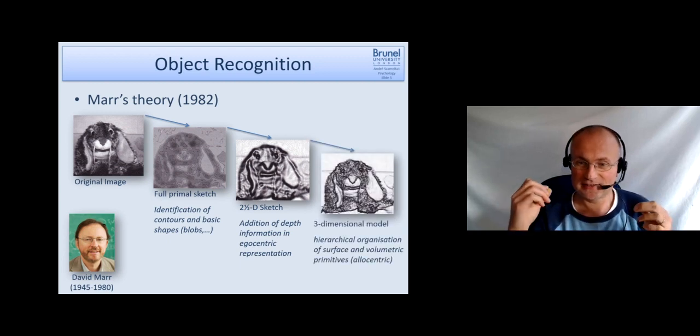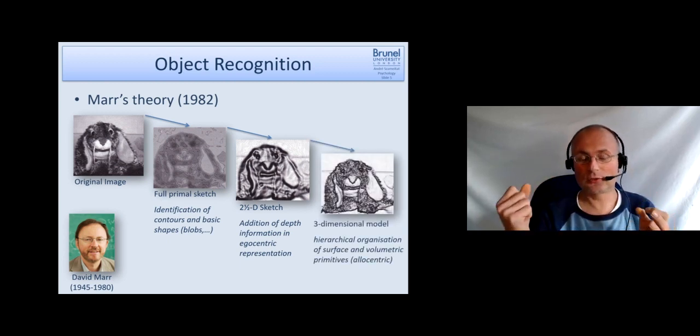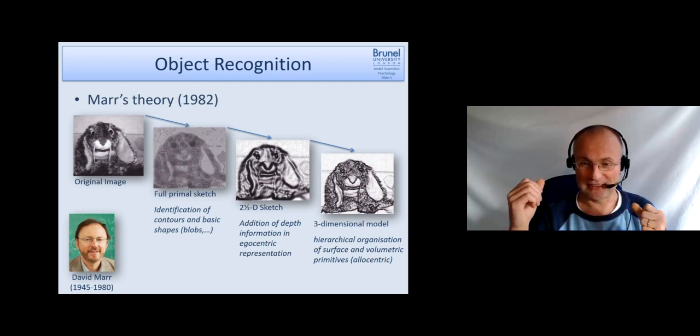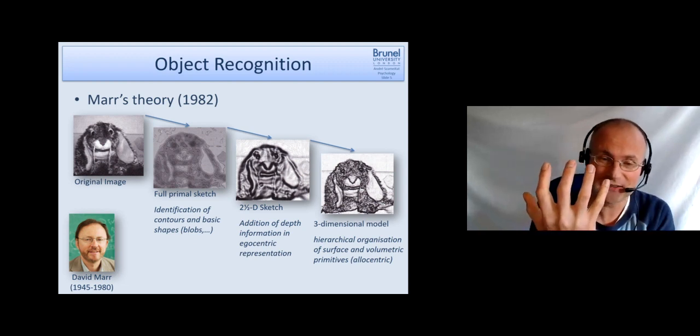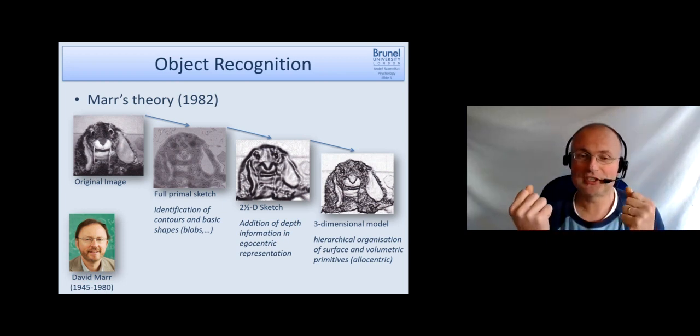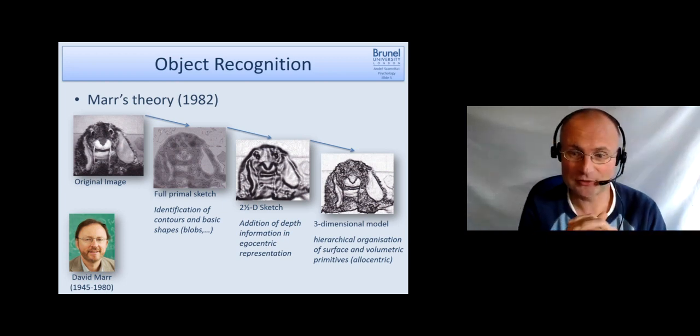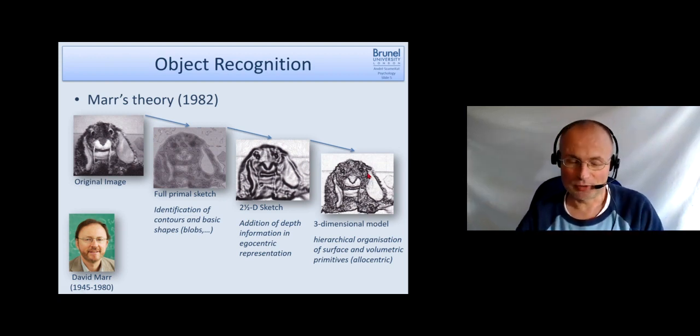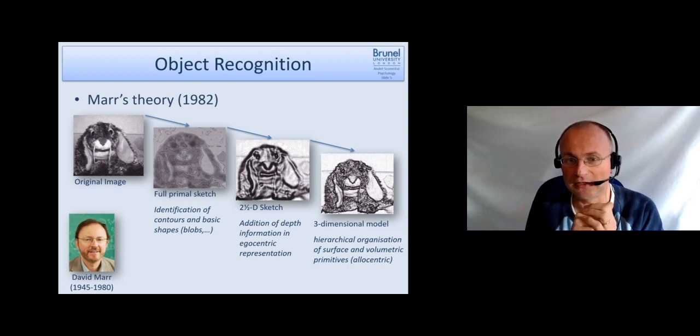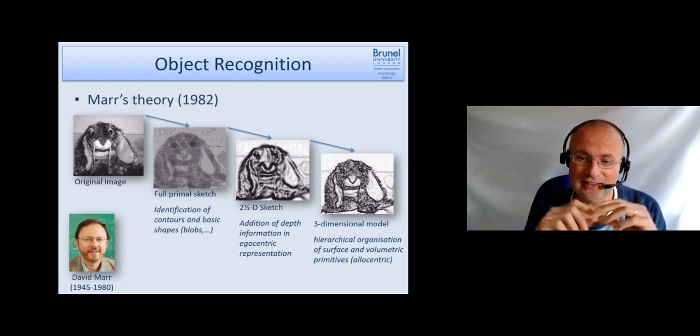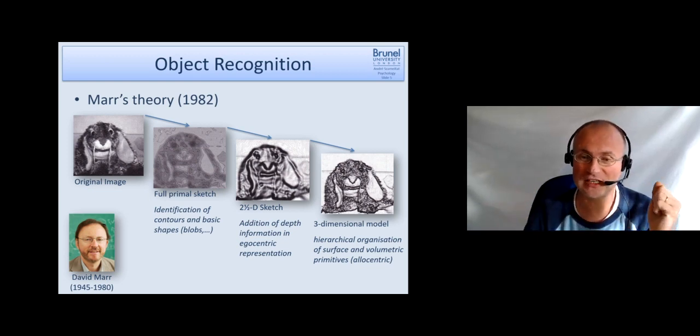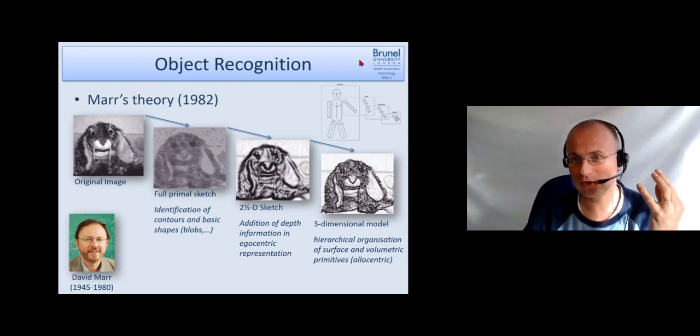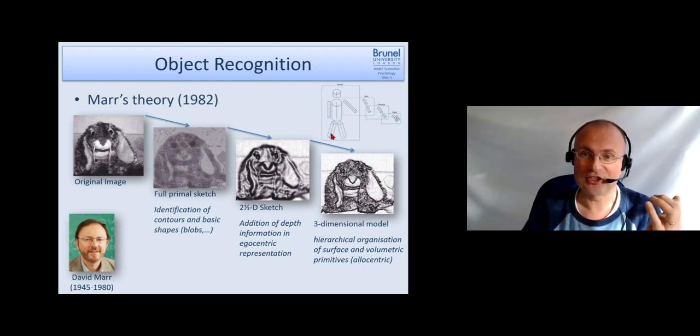And then in the last step it's put into a full three-dimensional model which is in an allocentric space. That means if I have a representation of the object even if I move the representation of the object doesn't change although my viewing angle changes. And this representation he proposed, and that's one of the key ideas Biedermann took over to his model, is that objects are represented by so-called primitives which stand for the surface and the volume.